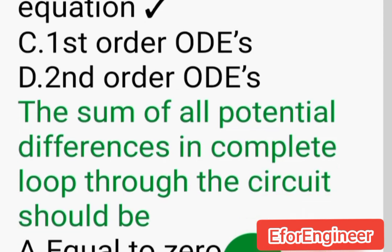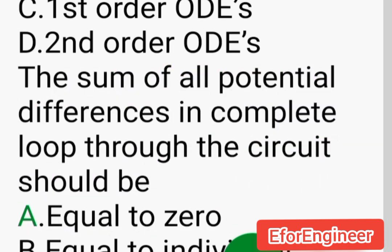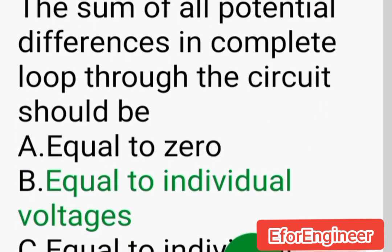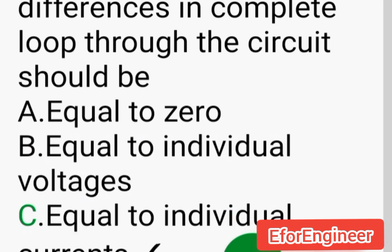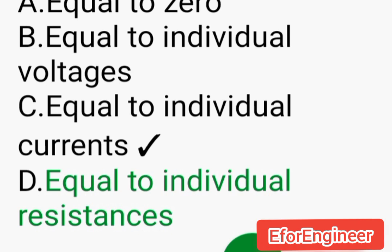The sum of all potential differences in a complete loop through the circuit should be: A. Equal to zero, B. Equal to individual voltages, C. Equal to individual currents, D. Equal to individual resistances.